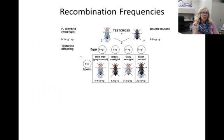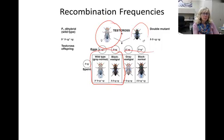In order to measure how close two genes are on the chromosome, we can conduct a test cross. A dihybrid female is always crossed to a double mutant male, because males don't undergo crossing over in fruit flies. Of the four possible offspring, two will be like their parents, but two will be recombinant.